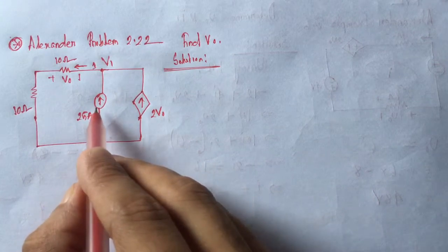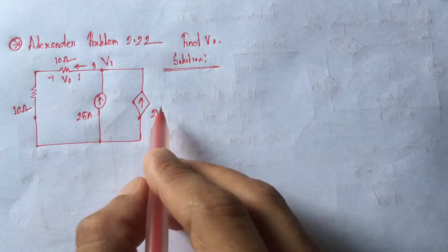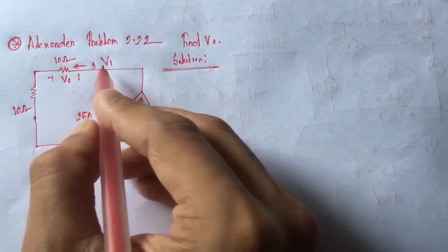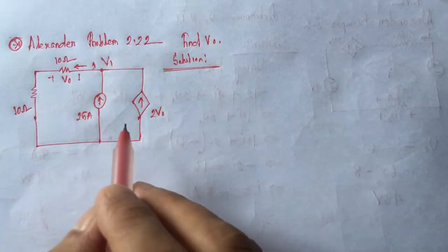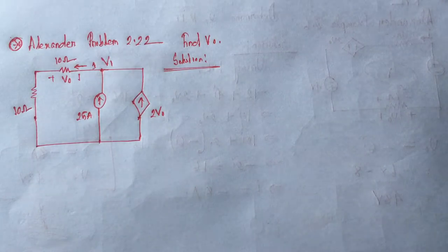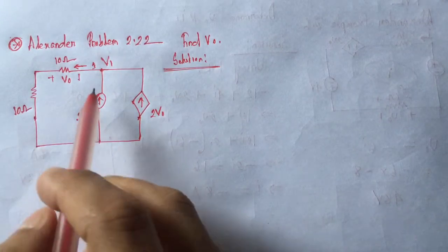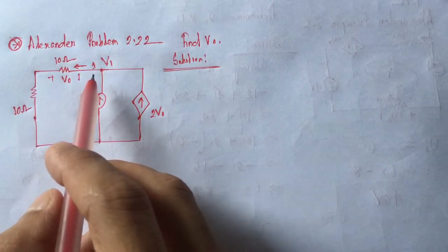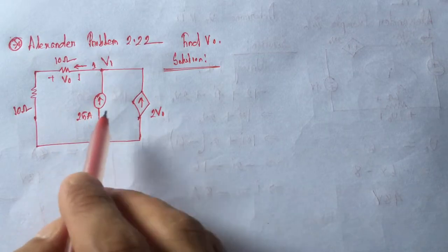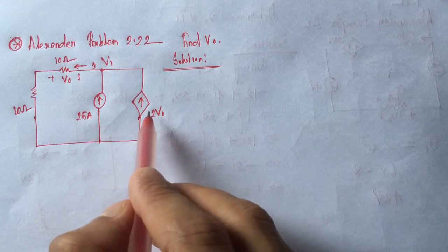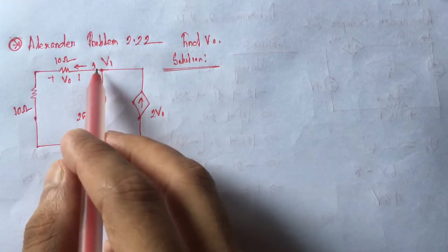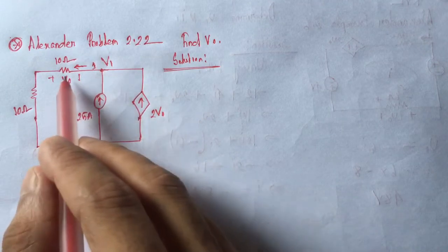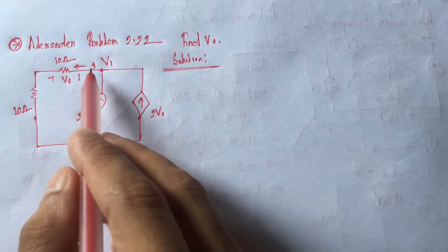We see a 25 ampere current and 2V0 are flowing upward. Now using Kirchhoff's Current Law, we know that summation of current entering any point will be equal to summation of current leaving from that point. So here 25 ampere and 2V0 summation will be equal to the current going out from this V1 point, which is the current through this 20 ohm resistance.